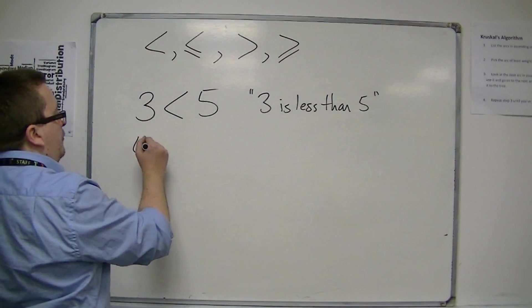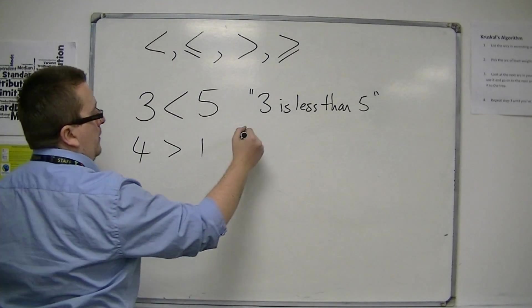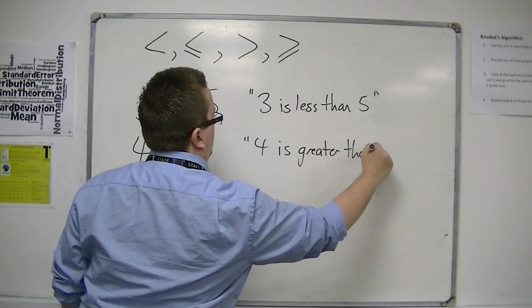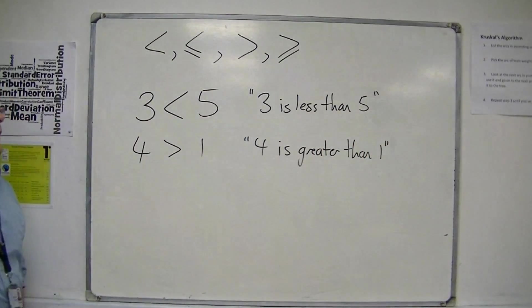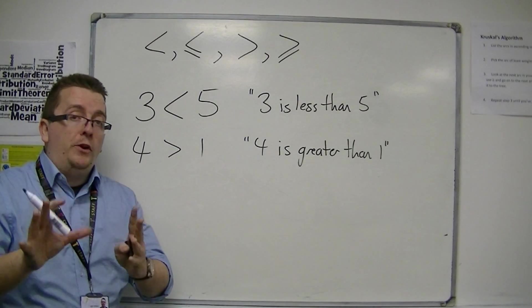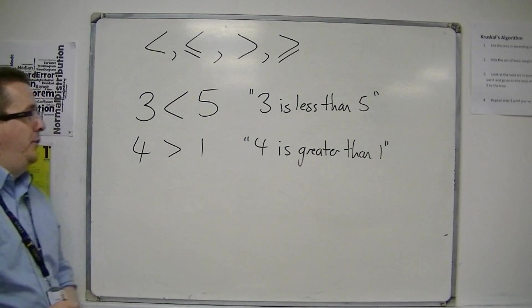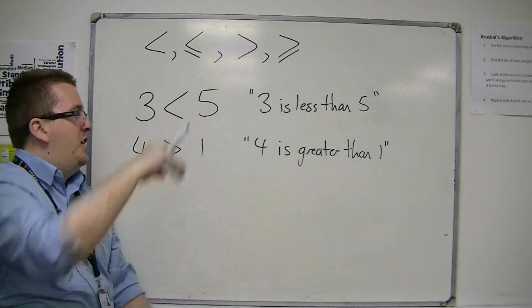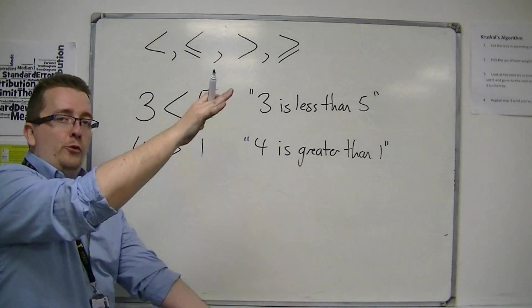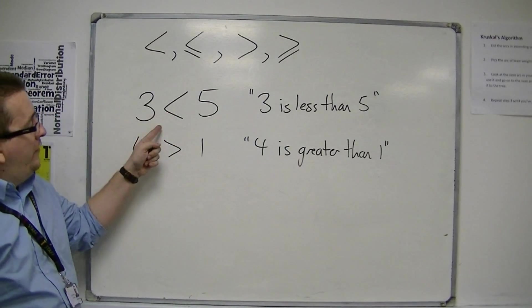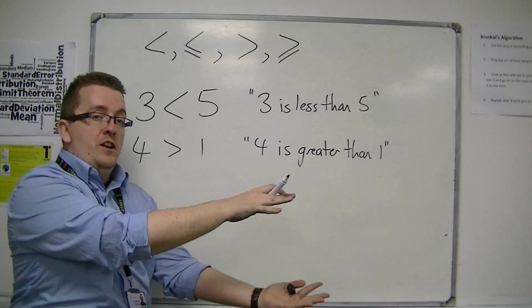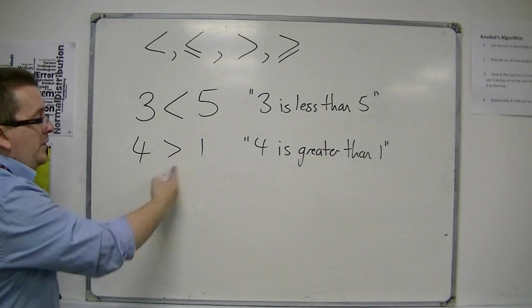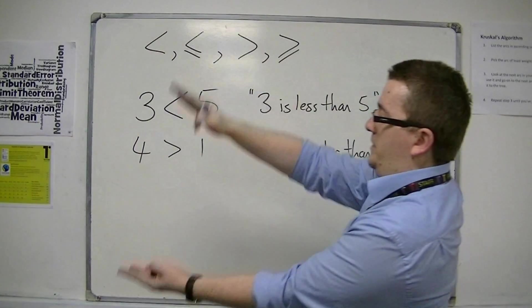I might have this: four is greater than one. The way that sometimes it can be taught in primary schools is that the crocodile will always try to eat the larger number. He's aiming his mouth towards the larger number. So in this case, it's aiming his mouth towards the five because that's larger than three. It's aiming his mouth towards the four because that's larger than one.